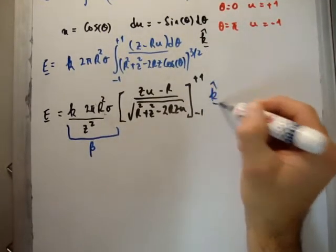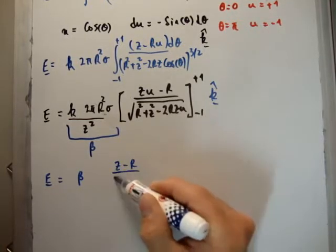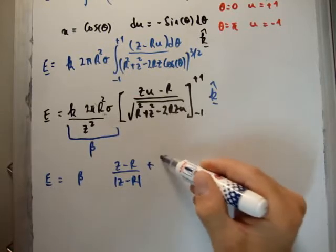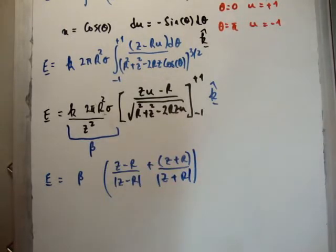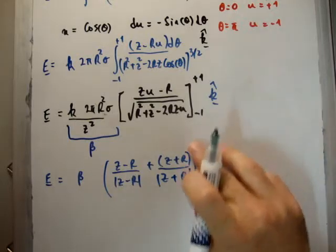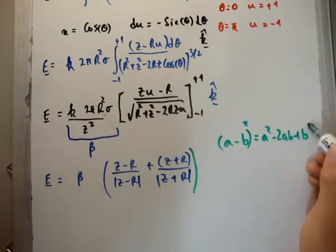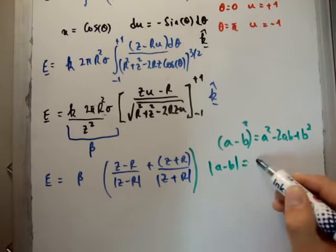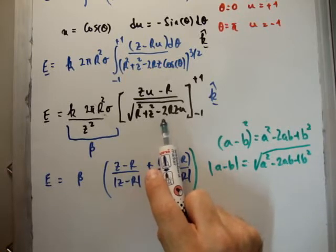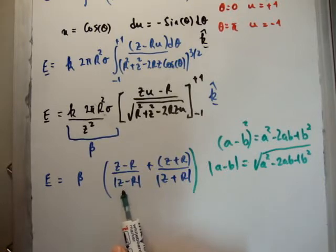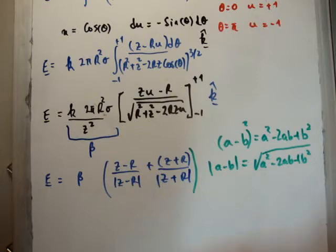We have the result in the k-hat unit vector direction. Plugging in the limits gives beta times: z minus r over the magnitude of z minus r, plus z plus r divided by the magnitude of z plus r. Note that the magnitude of a minus b equals the square root of a squared minus 2ab plus b squared, so this expression is the magnitude of z minus r. When we plug in the limits we also get R squared plus z squared plus 2Rzu, which is the magnitude of z plus r.